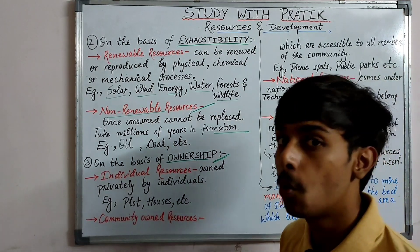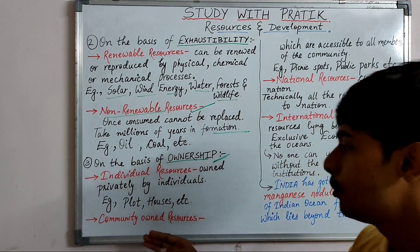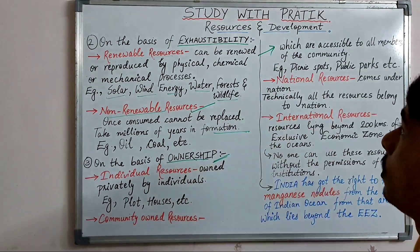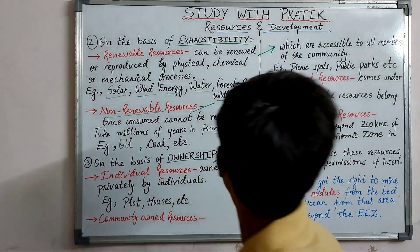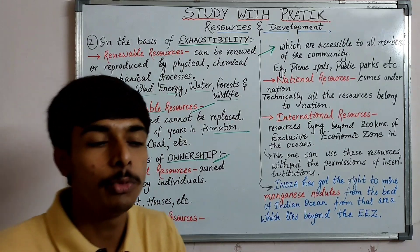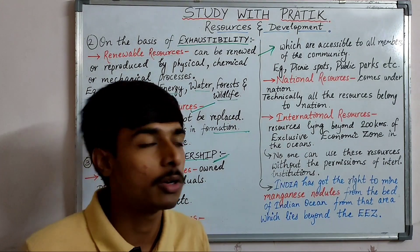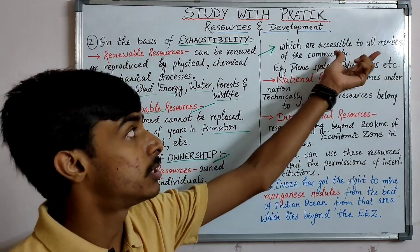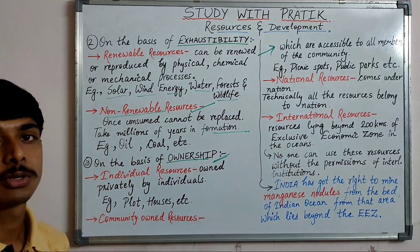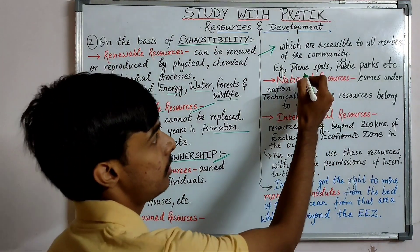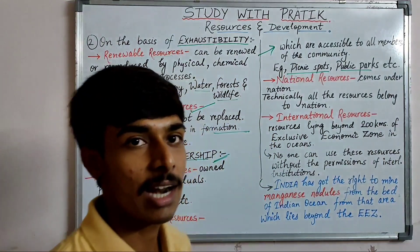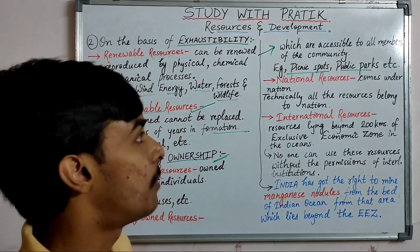Community owned resources are resources accessible to all members of a community. Every member of a community has a right to these resources. Examples include picnic spots and public parks.